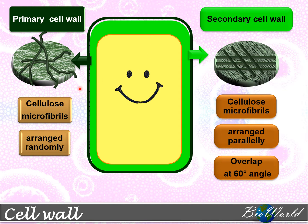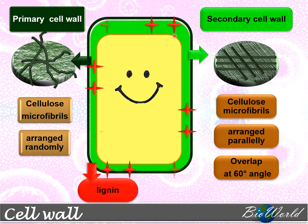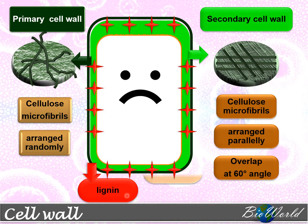To further strengthen the cell wall, some plant cells add lignin to their cell walls. Lignin is an impermeable form of lipid. This lignin then causes the cell to become a dead cell where the cytoplasm disappears, making the cell a hollow cell suitable for support.